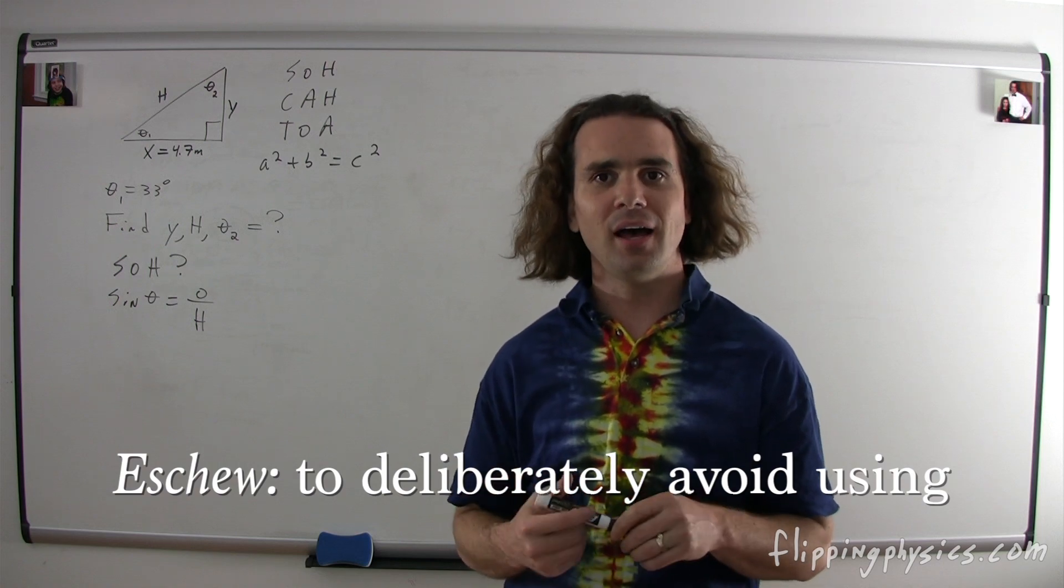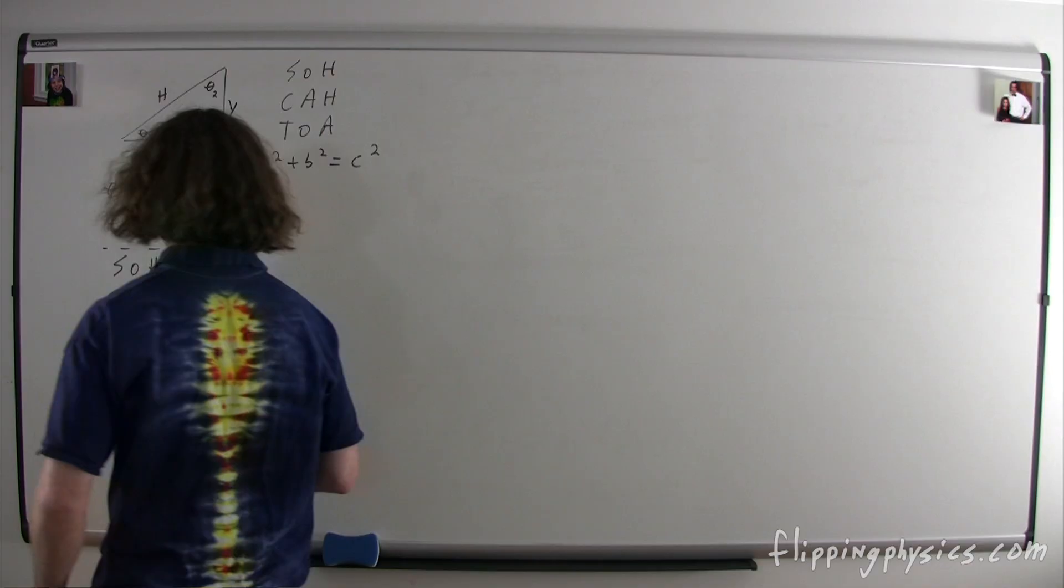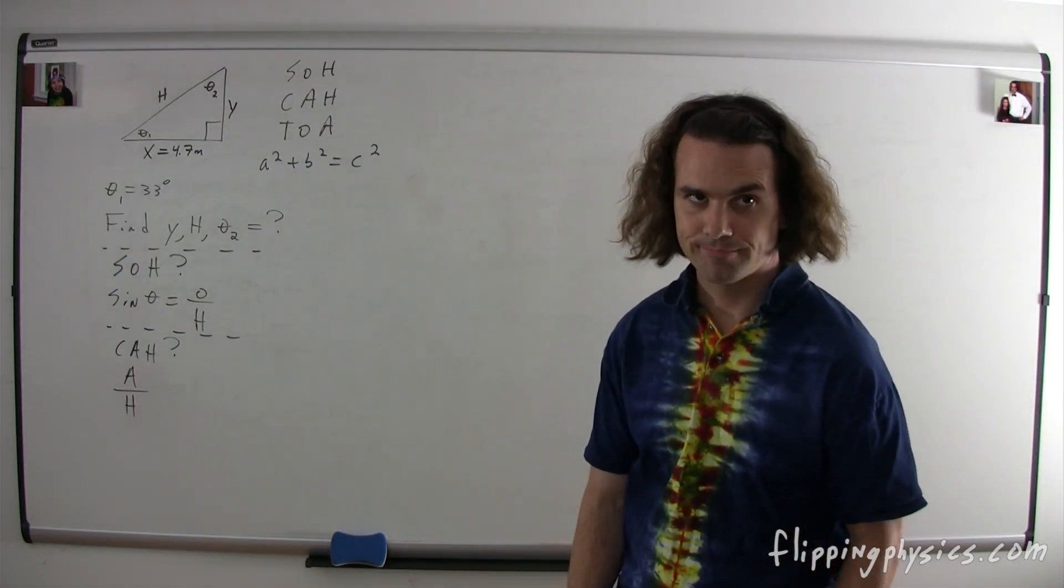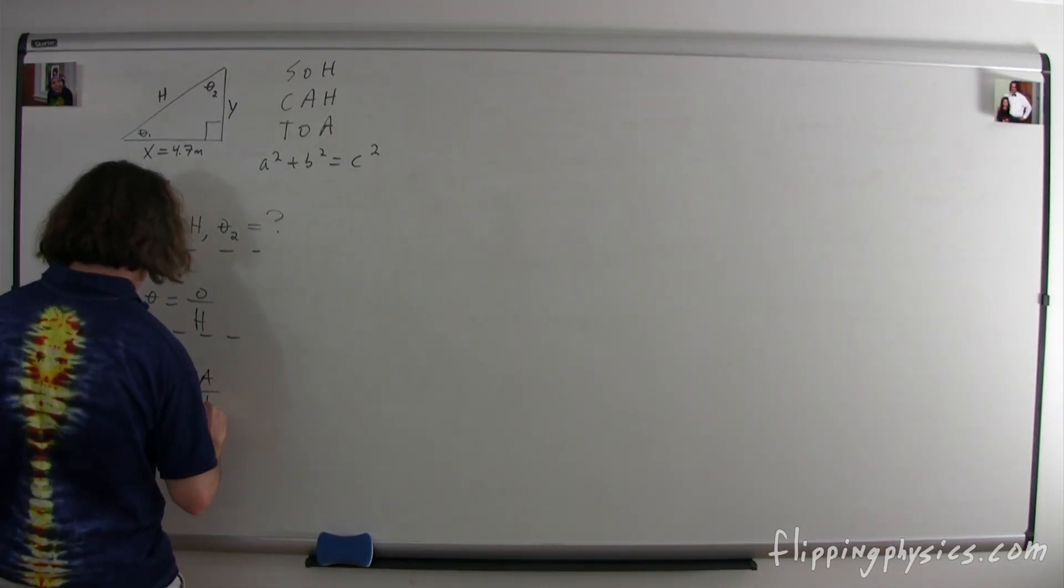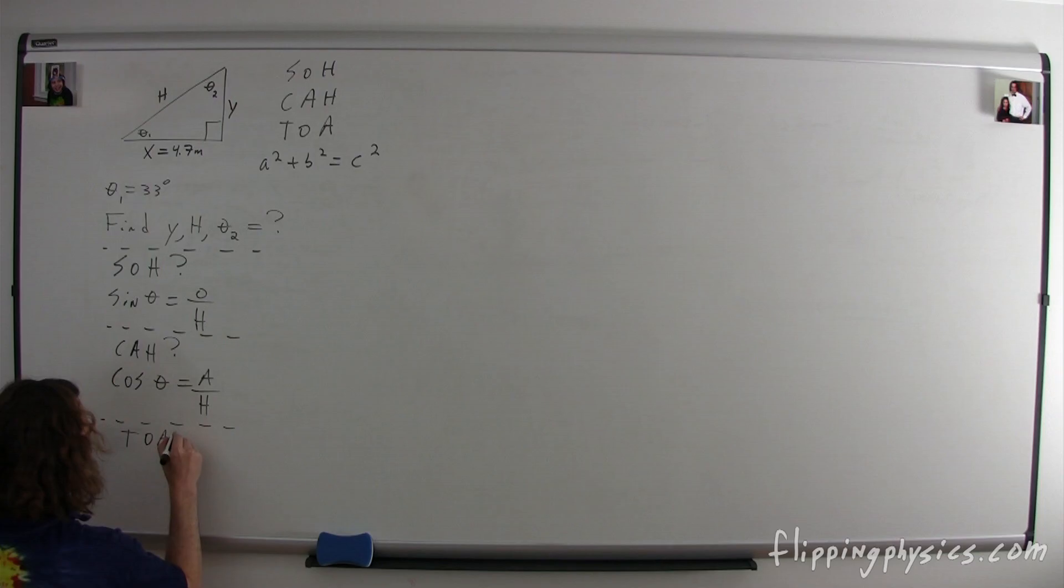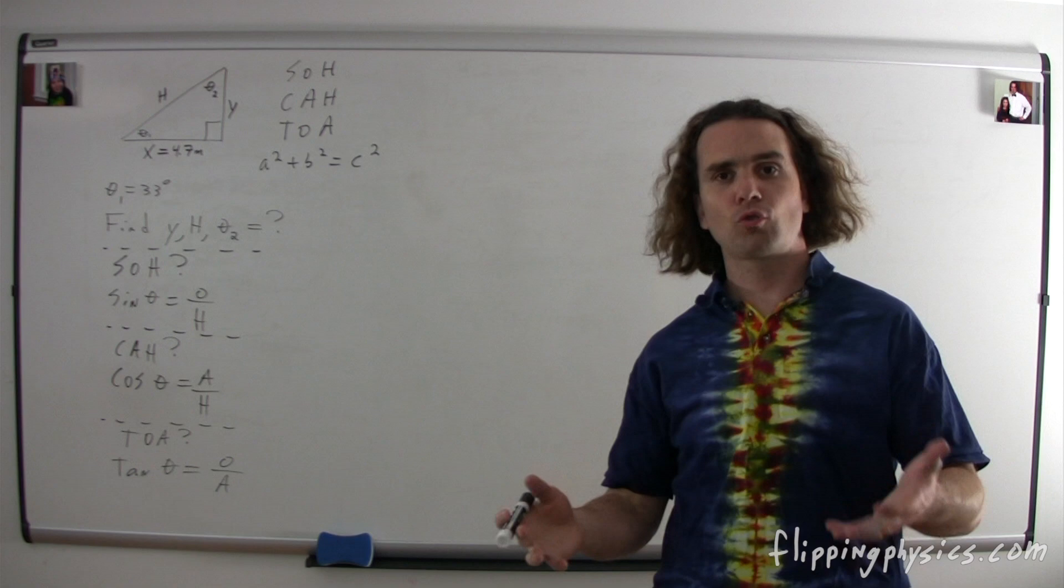Bobby, what does CAH mean? Adjacent over hypotenuse. Cosine theta equals adjacent over hypotenuse. And Billy, TOA. Tangent theta equals opposite over adjacent. Great.